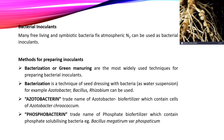Examples include Acetobacter, Bacillus, and Rhizobium. Acetobacterin is the trade name of the Acetobacter biofertilizer, which contains cells of Acetobacter rubi. Phosphobacterium is the trade name of the phosphate biofertilizer, which contains phosphate-solubilizing bacteria — for example, Bacillus megaterium var. phosphaticum.